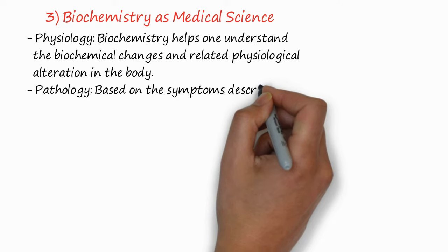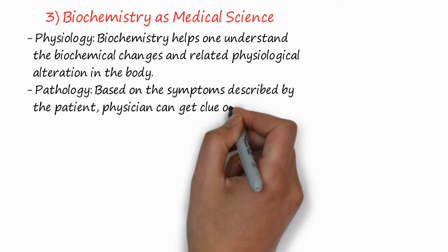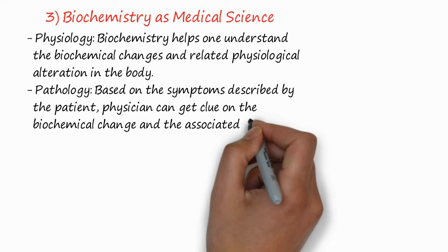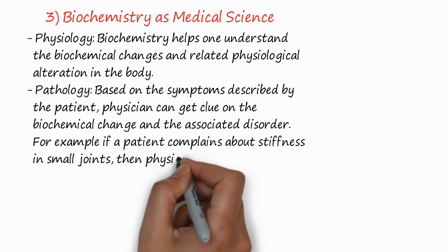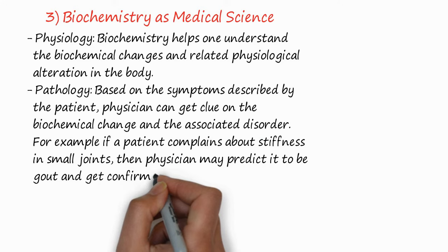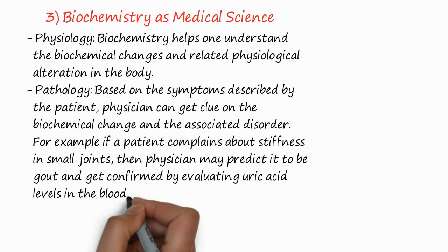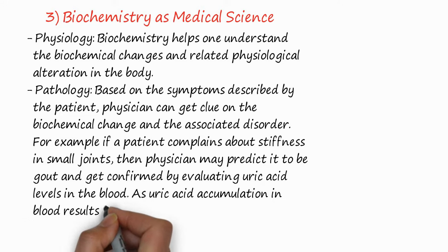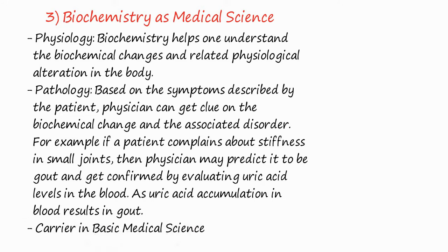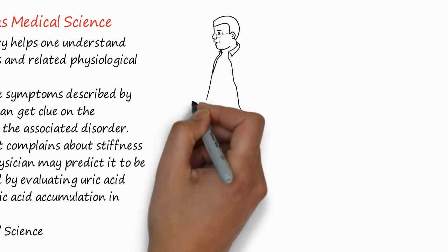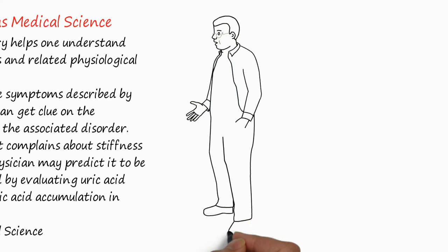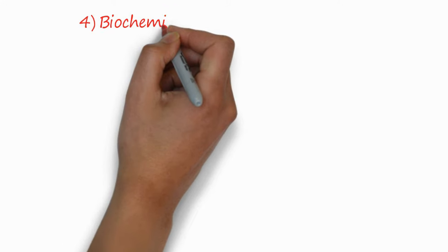Similarly in pathology, which is based upon the symptoms described by the patient, a physician gets clues on the biochemical changes in associated disorders. For example, if a patient complains about stiffness in small joints, the physician may predict gout and confirm it by evaluating uric acid levels in the blood — uric acid accumulation in the blood resulting in gout. This knowledge of biochemistry is essential for medical science, and you can open a medical laboratory.